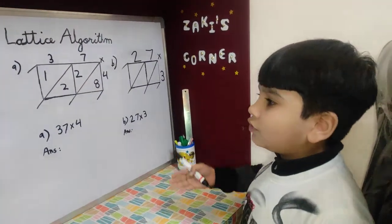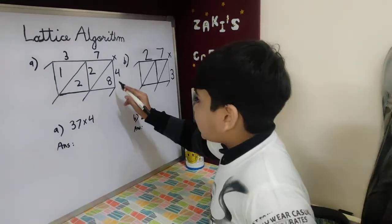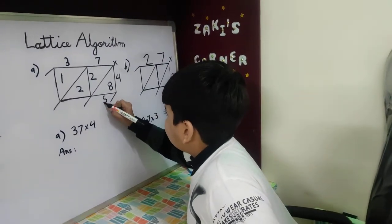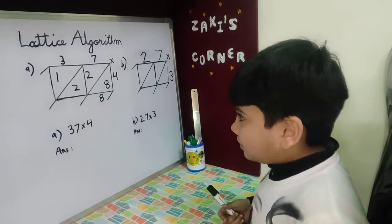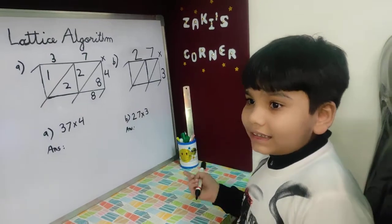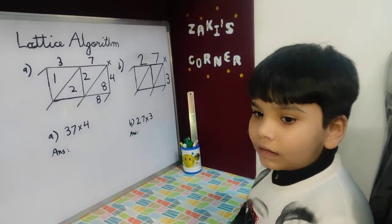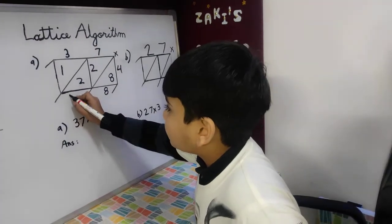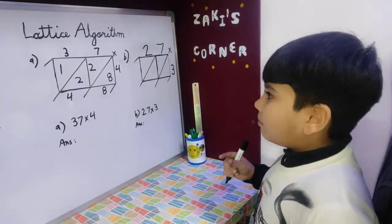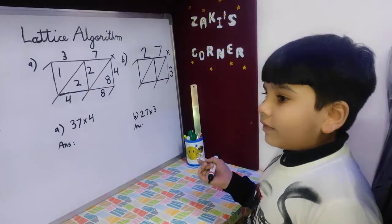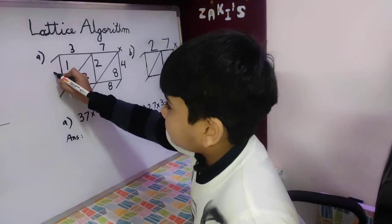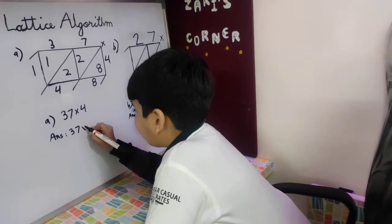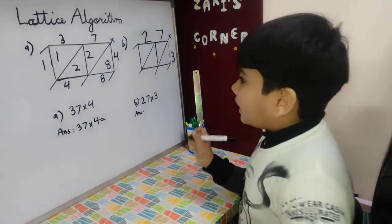Now we have to add the numbers diagonally. Eight will remain the same because it has no number to add. We will add two and two — how much will two plus two be? Two plus two is equal to four. And because the one doesn't have a number to add, one will remain the same. So, 37 multiply by 4 is equal to 148.